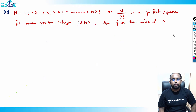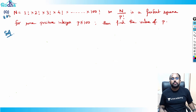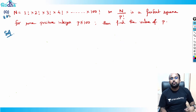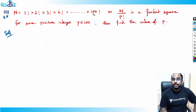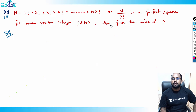Let's look at this fantastic question here with a very good concept. The question says that n equals 1 factorial into 2 factorial into 3 factorial into 4 factorial till 100 factorial, and n divided by p factorial is a perfect square for some positive integer p less than or equal to 100. Find the value of p.